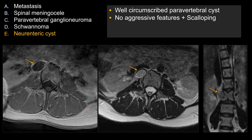The classic neuroenteric cyst should not enhance, or should only enhance very thin right at the margin, unless it's infected. You should never see an internal enhancing mass lesion, because if you see that, think of something that's more malignant.